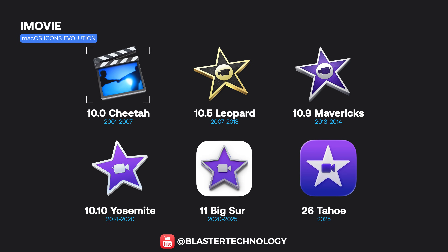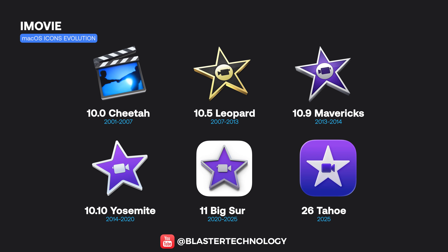The iMovie icon evolved from a realistic film clapperboard to the well-known star, first gold and later purple. The icon was progressively simplified until reaching its modern, flat form in macOS Tahoe.